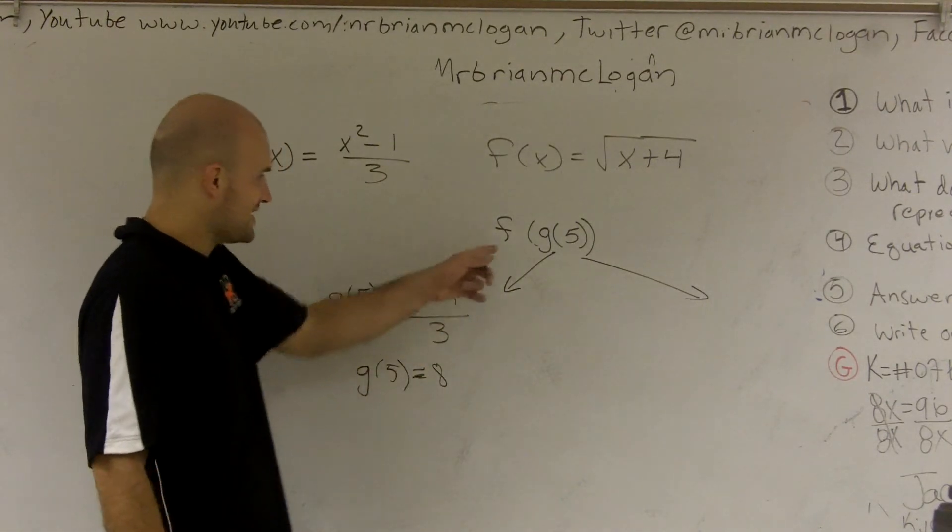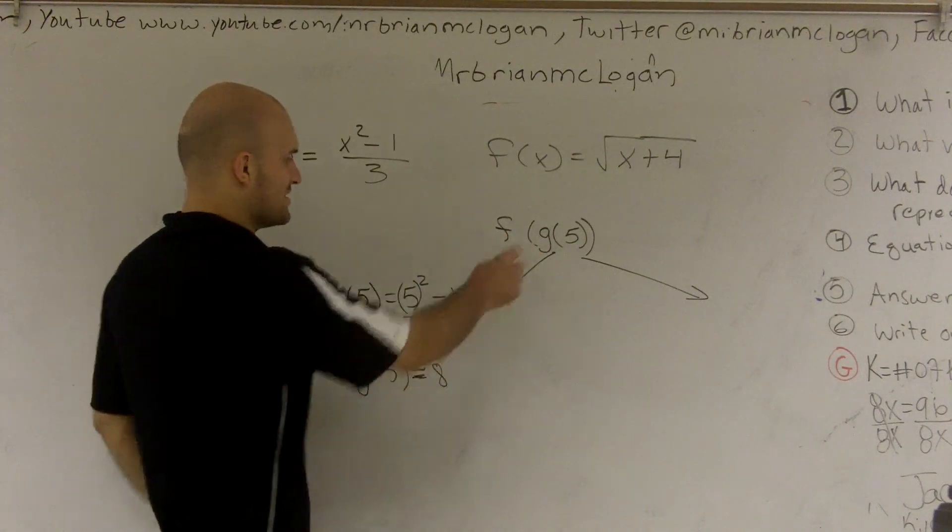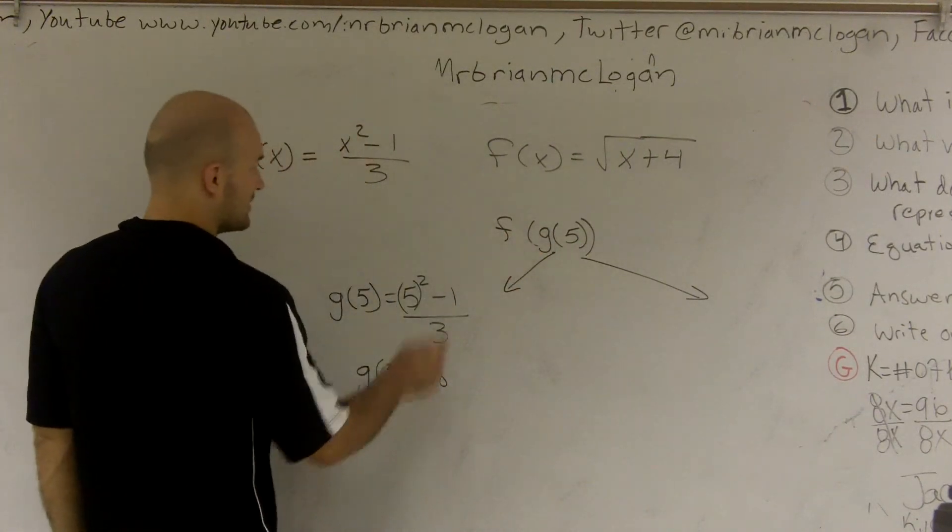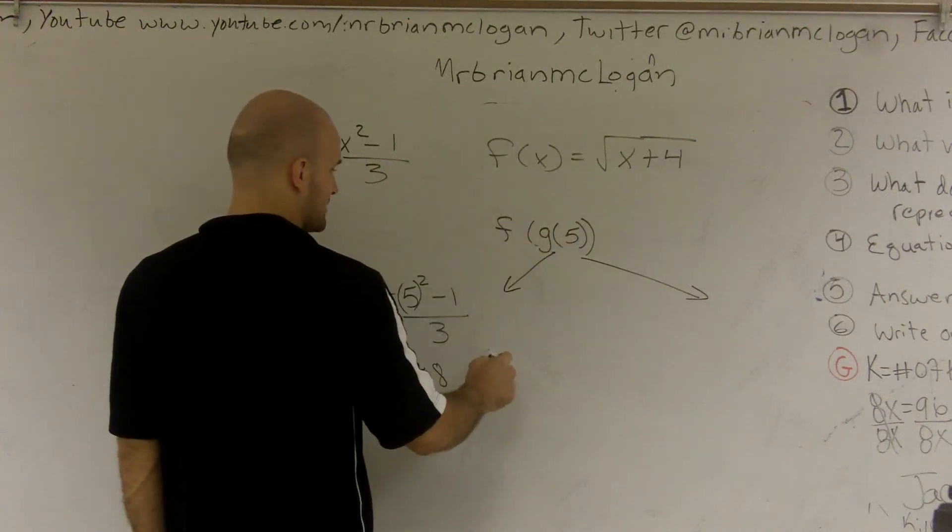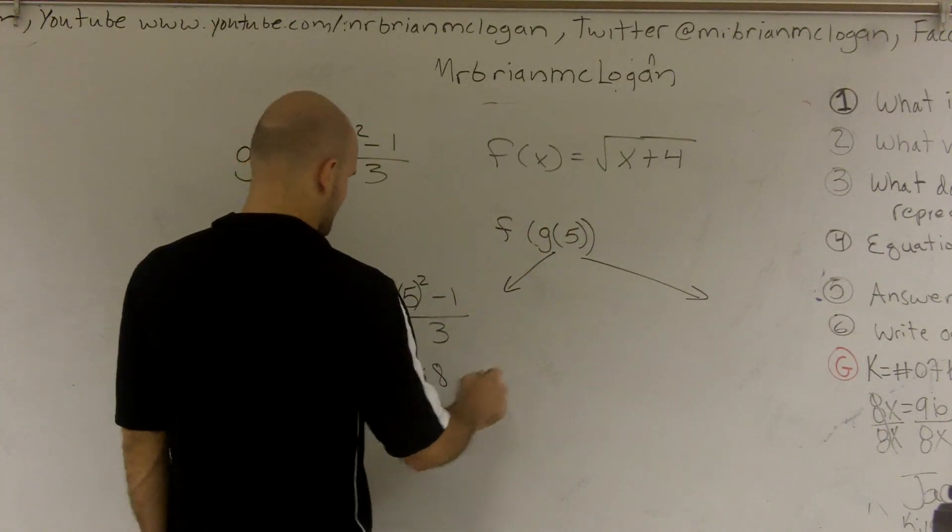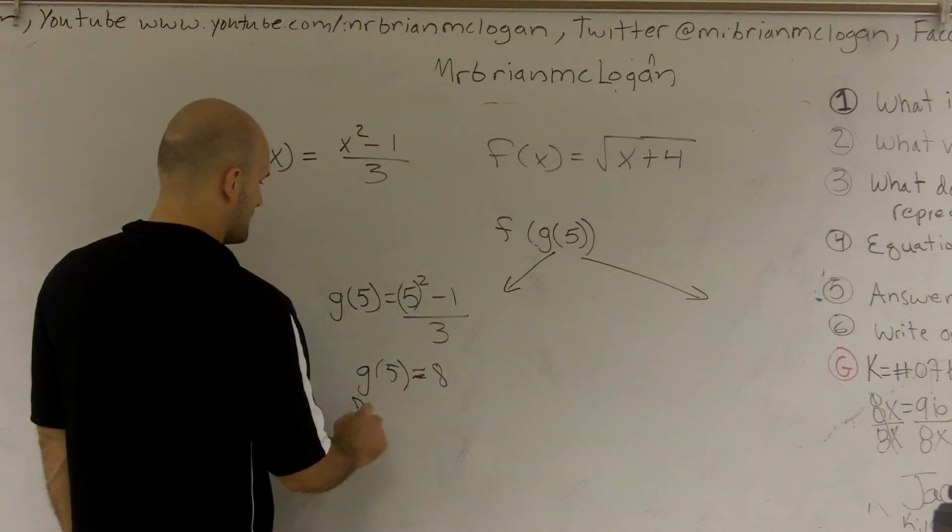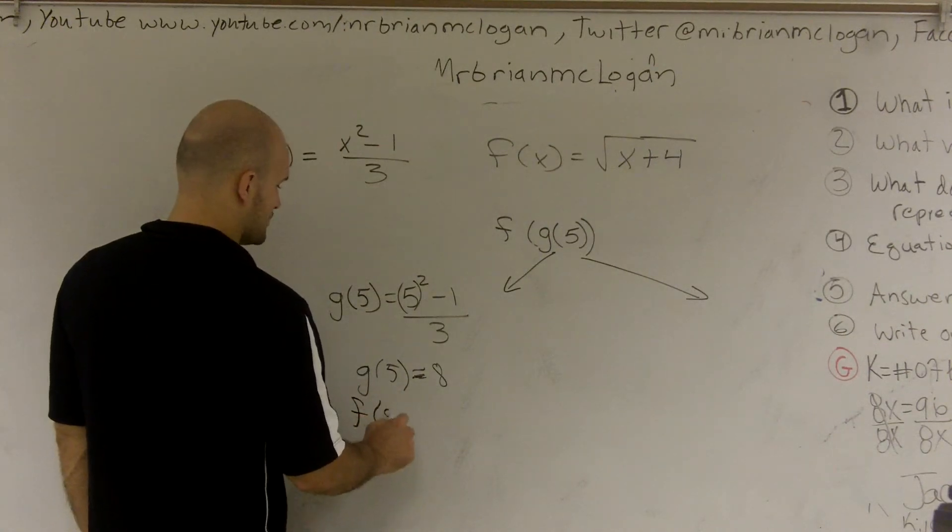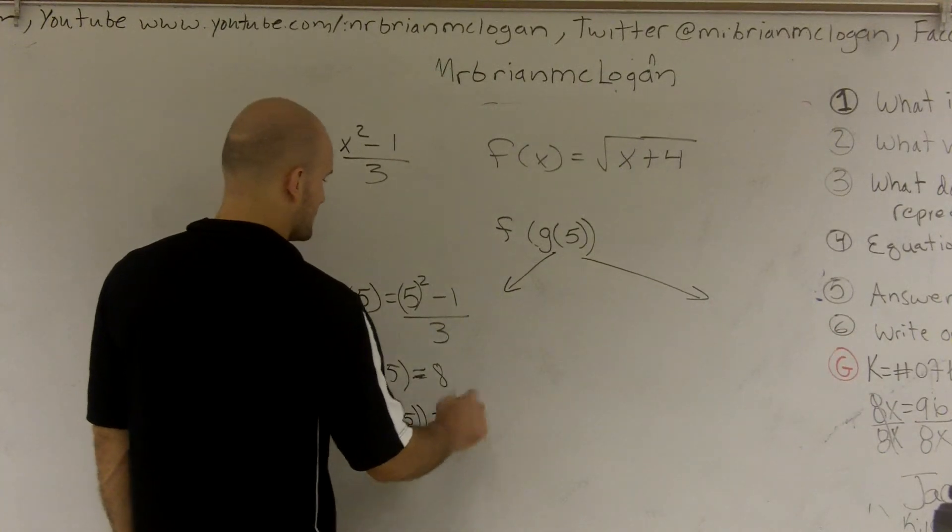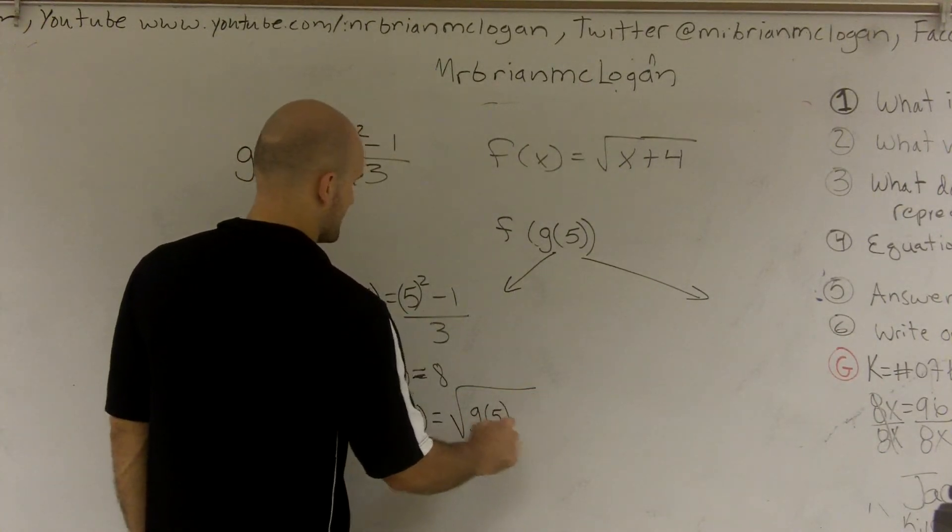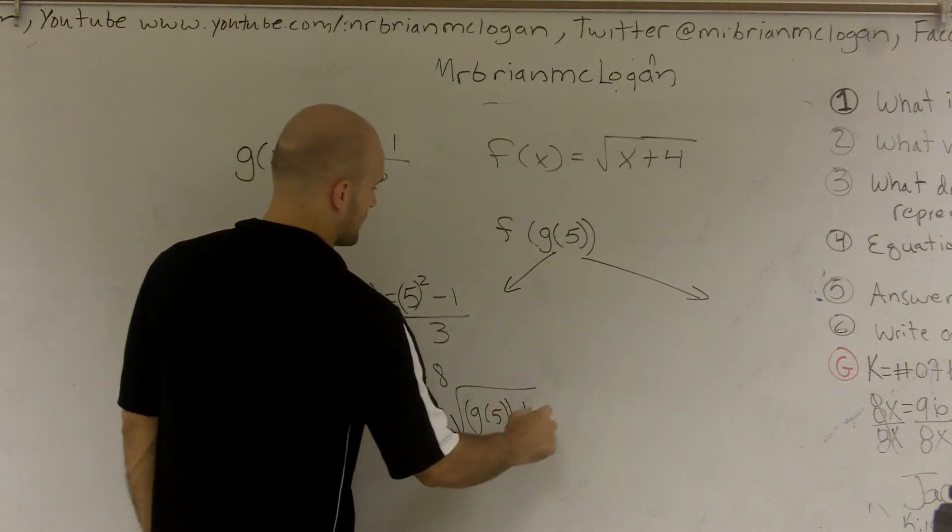Well, then what it's saying is to plug whatever that is. So if I was going to find f of, so it says to find f of g of 5. So therefore, it's going to look something like this. So you have f of g of 5 means you're going to plug in square root of g of 5 plus 4. Right?